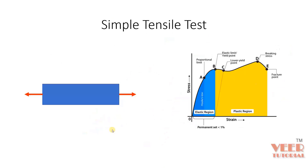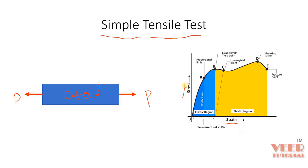In linear static analysis, we consider a test called the simple tensile test. We take a specimen — say, steel — pull it from both directions, and draw a stress-strain curve. Inside this curve, point A is called the proportionality limit, points B and C are the yield points, D is the breaking point, and E is the fracture point.